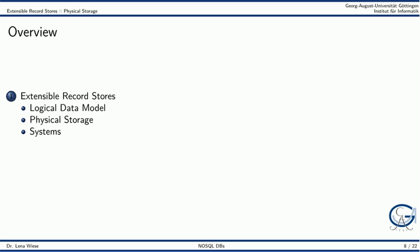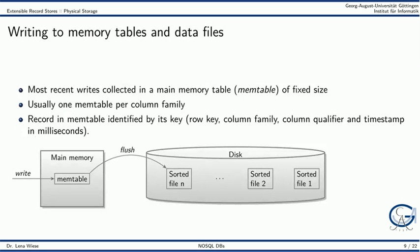In an extensible record store, the most recent writes are collected in a main memory table, or MEM table for short, which has a fixed size. There is usually one MEM table per column family. Records in a MEM table are identified by the full key, that is, the row, the column family, the column qualifier, and the timestamp.